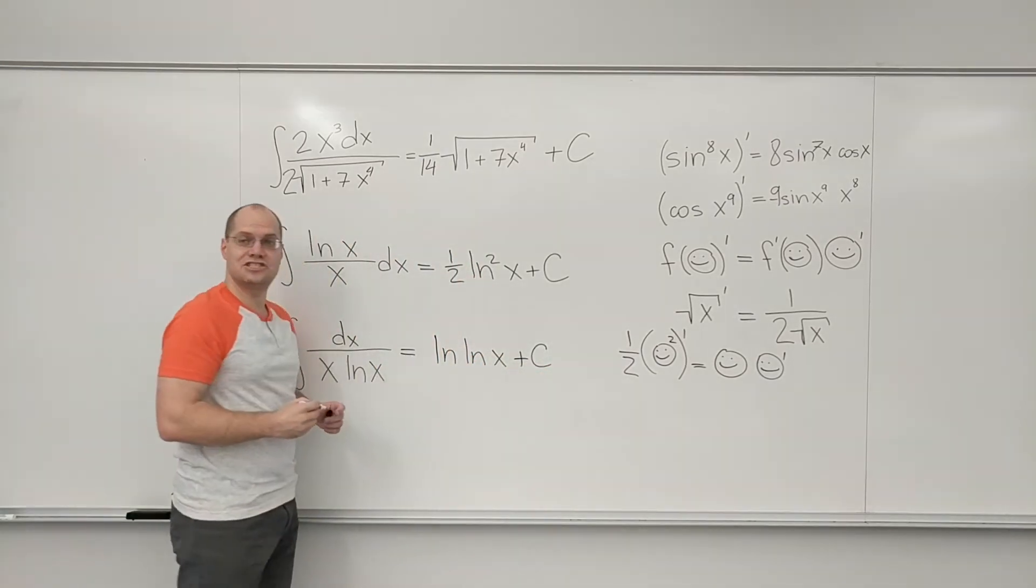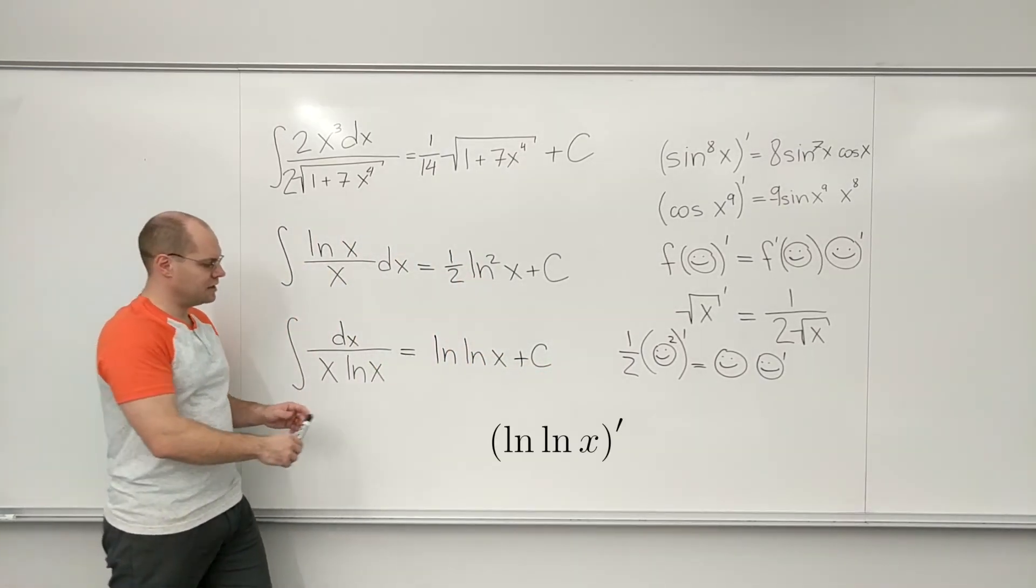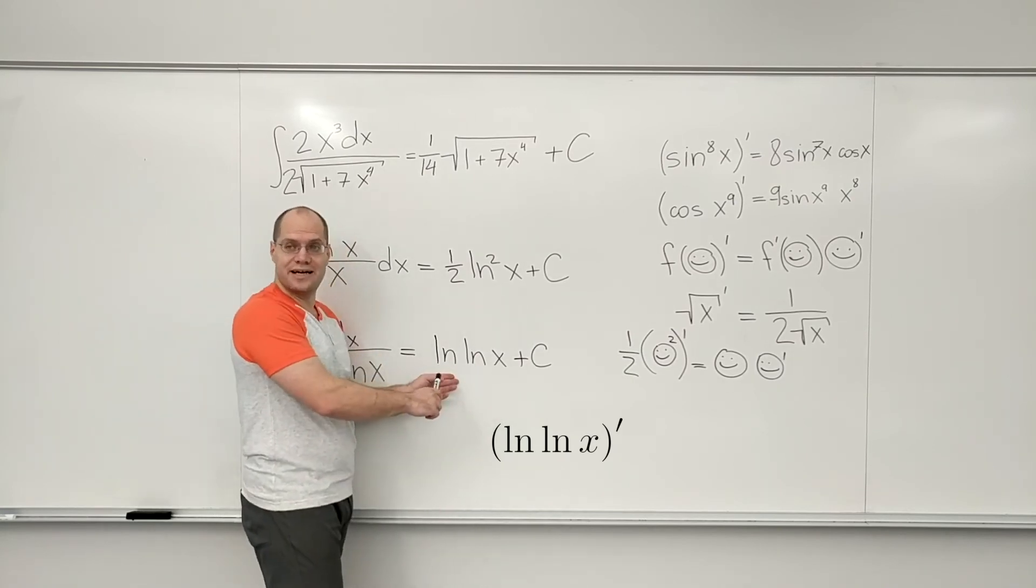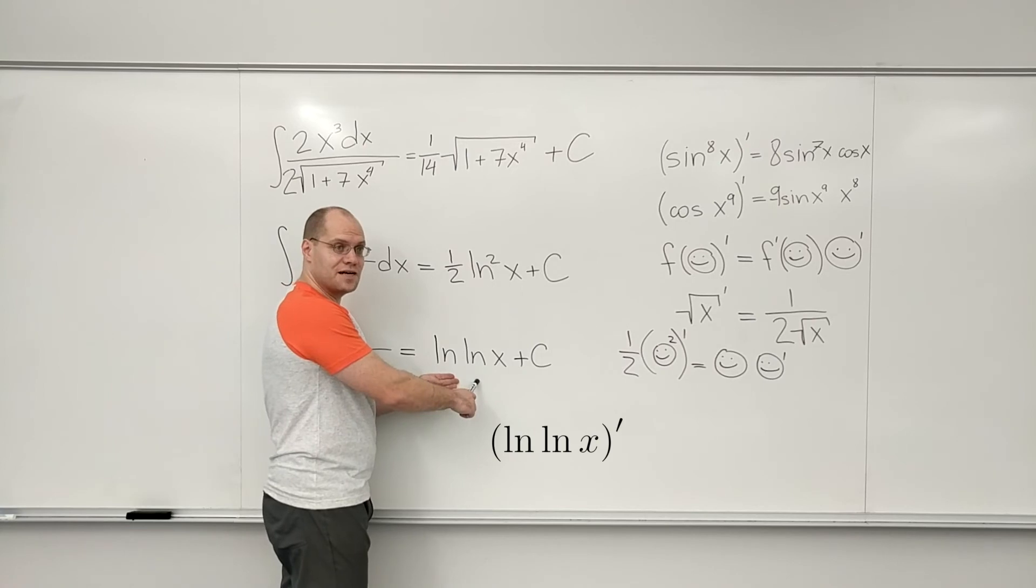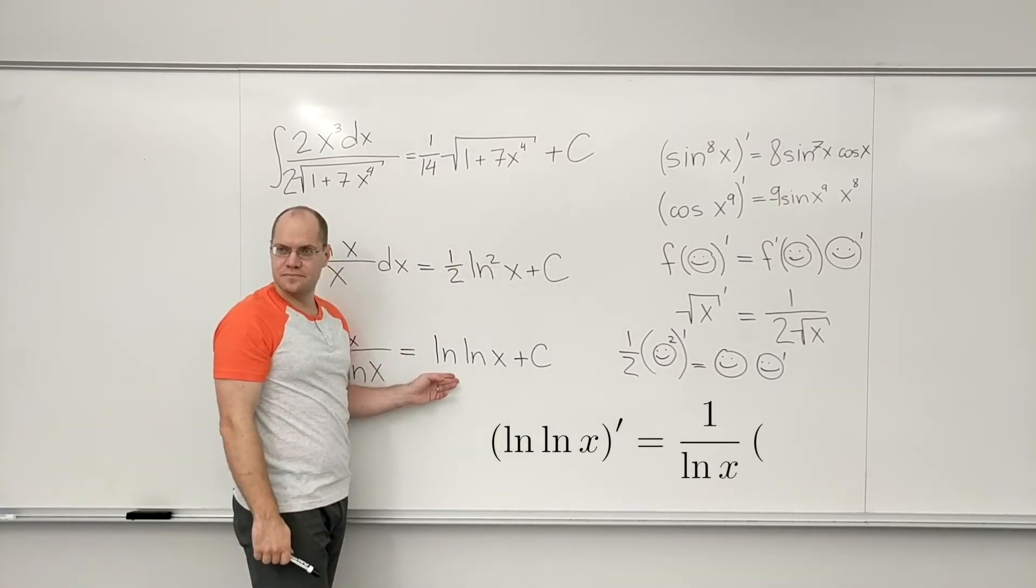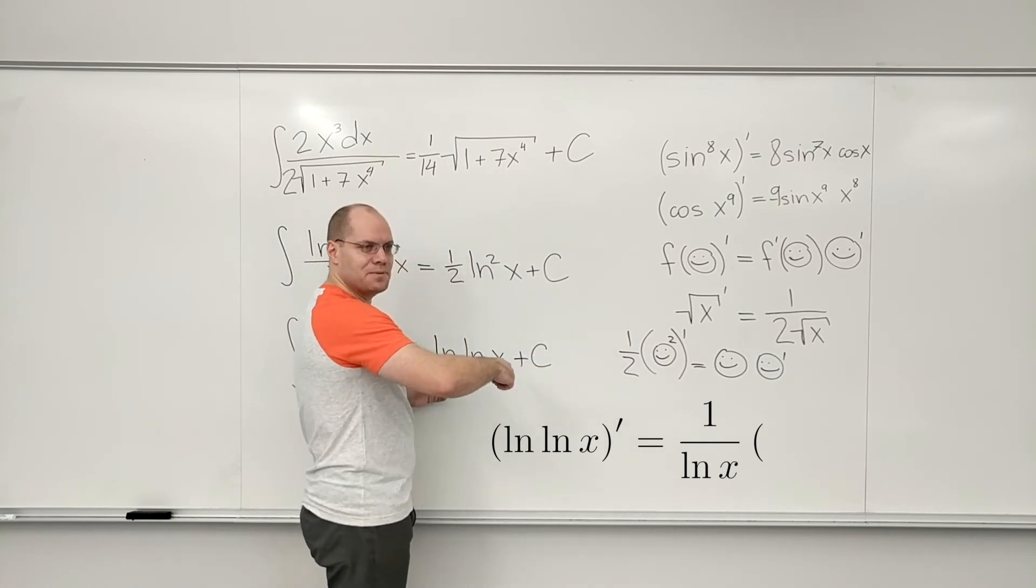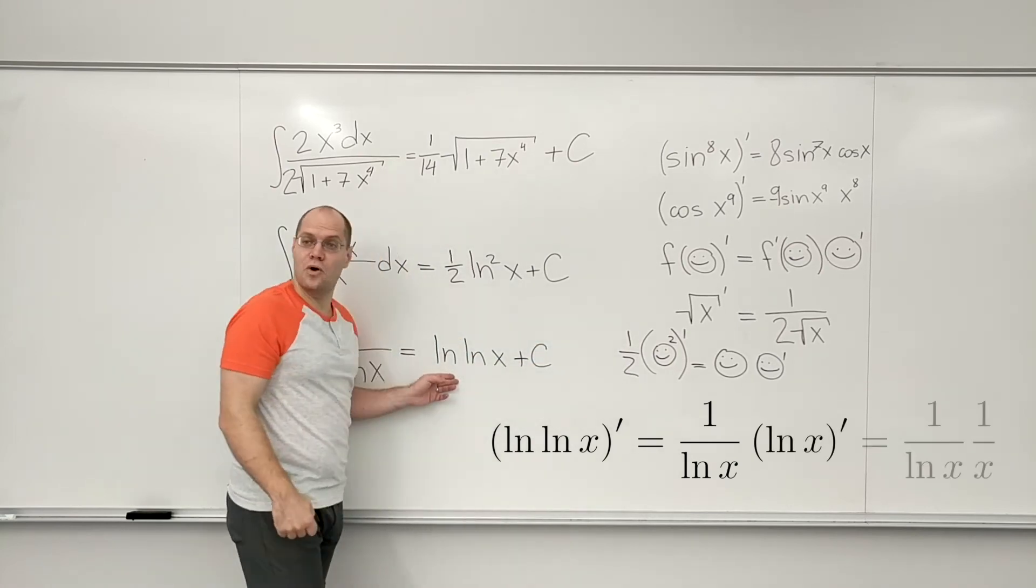And you check by differentiation that this is correct. Because this is log of something. The derivative of log of something is 1 over log. And then you have to keep rolling with the chain rule and multiply it by the derivative of log, which is 1 over x.